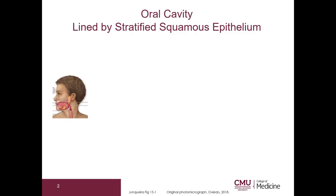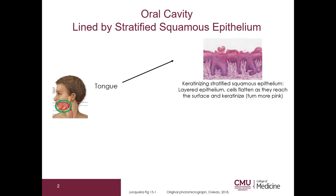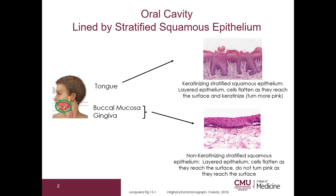The oral cavity is lined by stratified squamous epithelium. Here you can see the tongue on the right is lined by keratinizing stratified squamous epithelium. This is a layered epithelium and the cells flatten as they reach the surface and keratinize. You can tell it's keratinized because it is a darker pink than the epithelium below it. The buccal mucosa and the gingiva are composed of non-keratinizing stratified squamous epithelium.